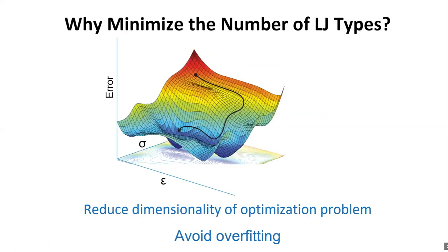Why do we want to minimize the number of Lennard-Jones types? There are two reasons aside from simplicity. One is to reduce the dimensionality of the optimization problem — finding a global optimum over epsilon and sigma parameters becomes more problematic as you add more dimensions. In addition, having fewer parameters reduces the risk of overfitting, where you get good results on your training set but the force field doesn't work well on data outside your training set.